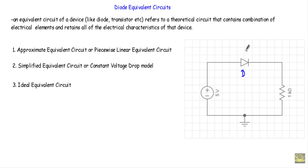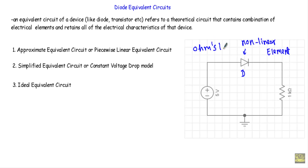We know that a diode is a non-linear element. And when we classify an element as a non-linear element, we cannot apply Ohm's law in that circuit. So when a circuit contains a non-linear element or electronic devices like diode or transistor, that circuit will not follow traditional circuit analysis methods like Ohm's law, KVL, mesh analysis, nodal analysis, superposition theorem, Thevenin theorem, Norton theorem, maximum power transfer theorem, or source transformation theorem.